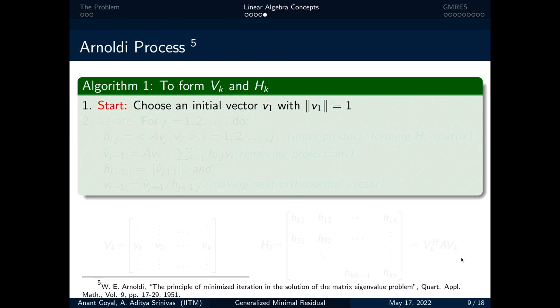first, we will be choosing an initial vector v₁ such that its norm is equal to 1. Now, we obtain the entries of the Hessenberg matrix hᵢⱼ as the inner product of v₁ along with the next vector Av₁.